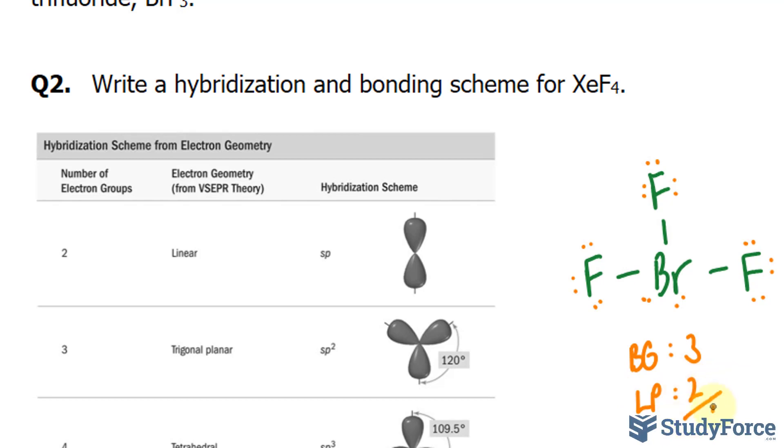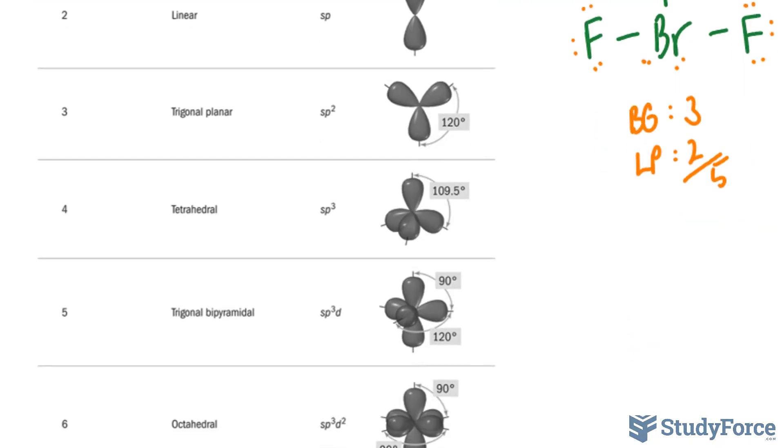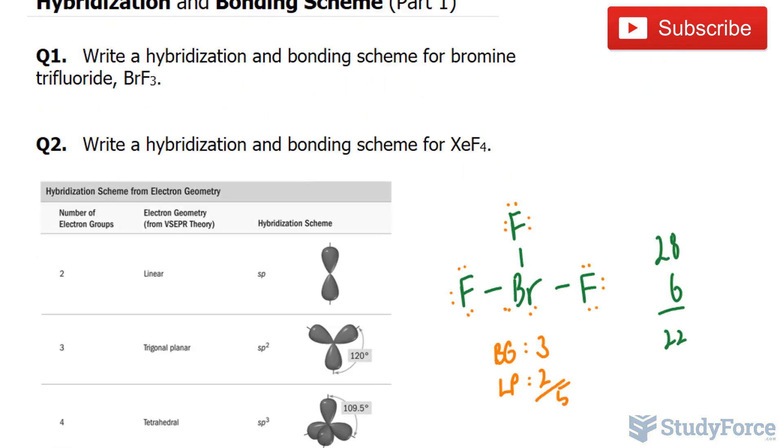Adding this up, we get 5. Using this information, in particular 5, that represents the electron groups, we can use this chart. And you'll notice that if you have 5 electron groups around a central atom, you're dealing with a trigonal bipyramidal, and that has a hybridization scheme of sp3d. So that answers the first part.